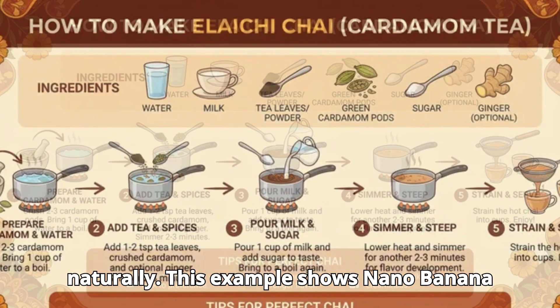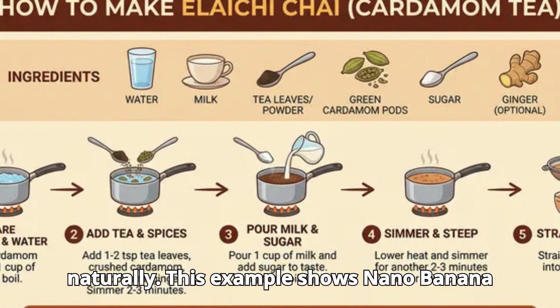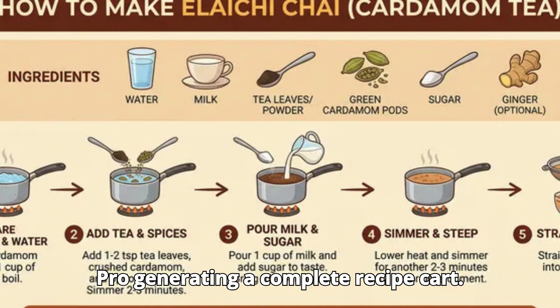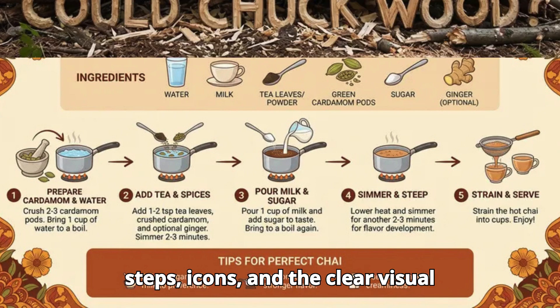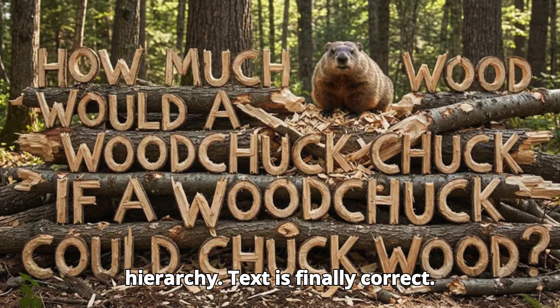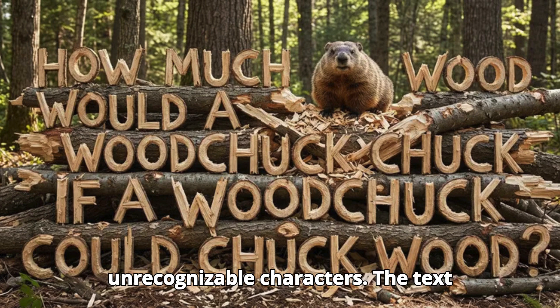This example shows Nano Banana Pro generating a complete recipe card from a text prompt. It creates steps, icons, and a clear visual hierarchy. Text is finally correct — notice there are no typos and no unrecognizable characters.